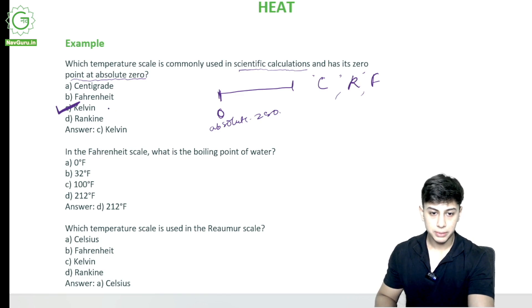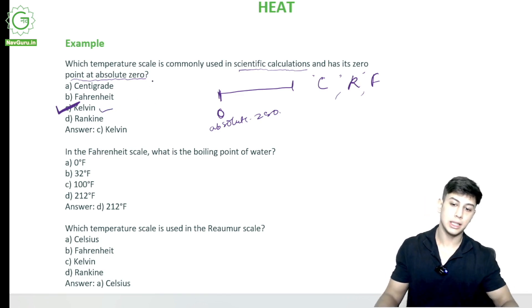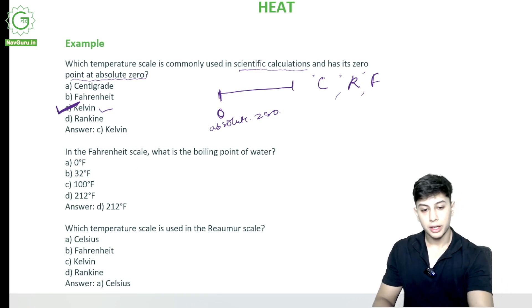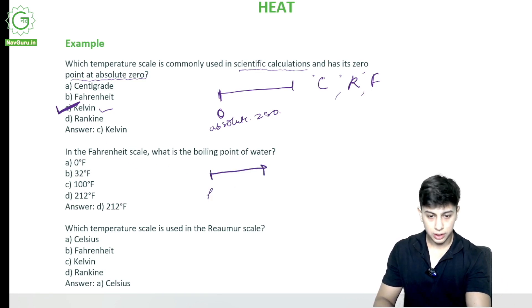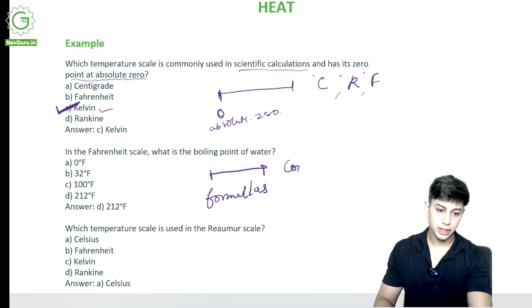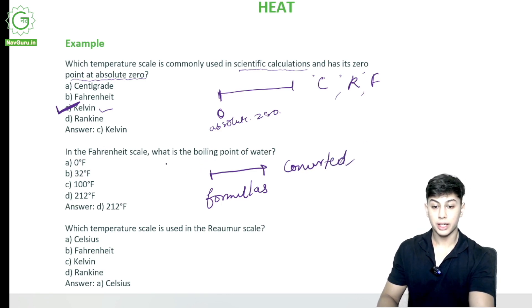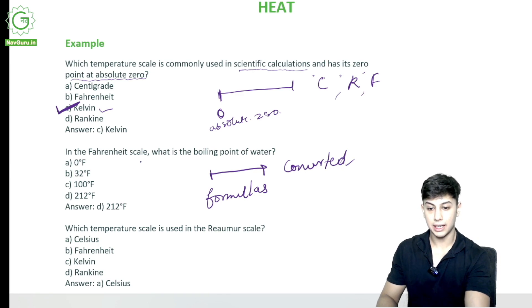In the Fahrenheit scale, what is the boiling point of water? I told you to remember all the scales and all the formulas for how they are converted. The boiling point of water in the Fahrenheit scale is 212 degrees Fahrenheit.